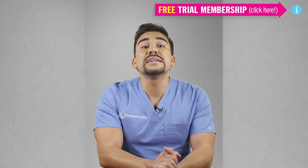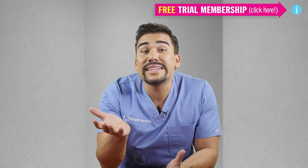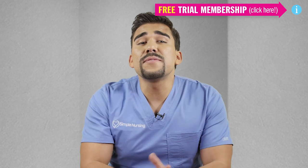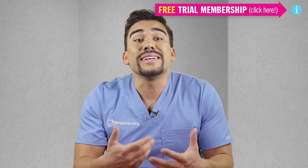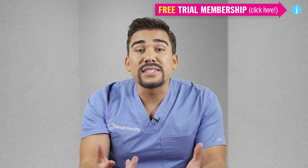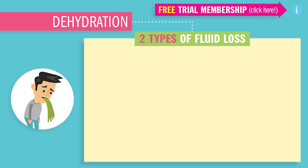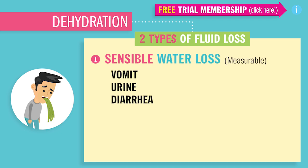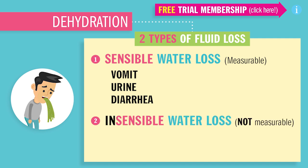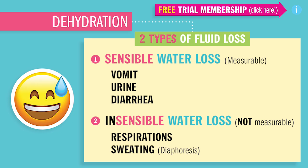Let's go over some causes of dehydration — why does it occur? Fluids can leave your body in many different ways. First, let's talk about the two different kinds of fluid loss. We have sensible water loss, which is fluid loss we can measure, like vomiting, urination, or diarrhea. And also insensible water loss, which is water we cannot measure, like with respirations or profound sweating, also called diaphoresis.